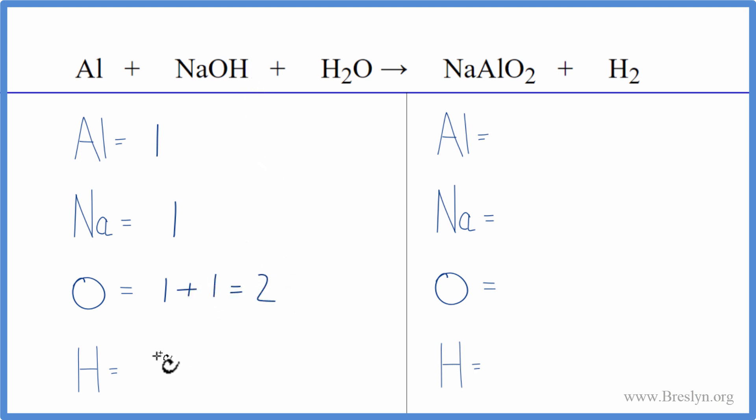And hydrogens, we have one of those. And next we have the two with the water. So now we have three hydrogen atoms. On the product side, we have one aluminum and one sodium. We have two oxygens and two hydrogens.